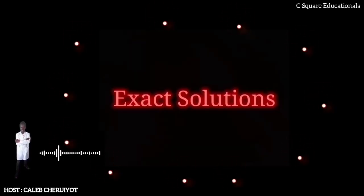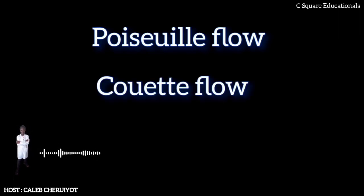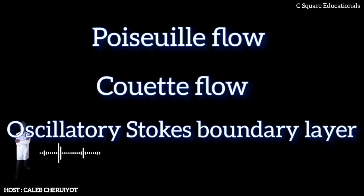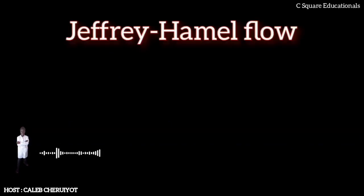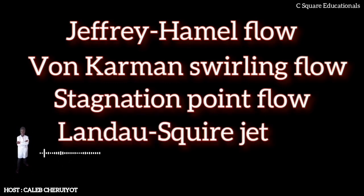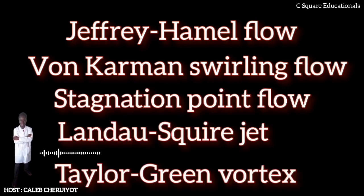Some exact solutions to the Navier-Stokes equations exist. Examples of degenerate cases with the nonlinear terms in the Navier-Stokes equations equal to zero are Poiseuille flow, Couette flow, and the oscillatory Stokes boundary layer. But also more interesting example solutions to the full nonlinear equation exist, such as Jeffery-Hamel flow, von Kármán swirling flow, stagnation point flow, Landau-Squire jet, Taylor-Green vortex.